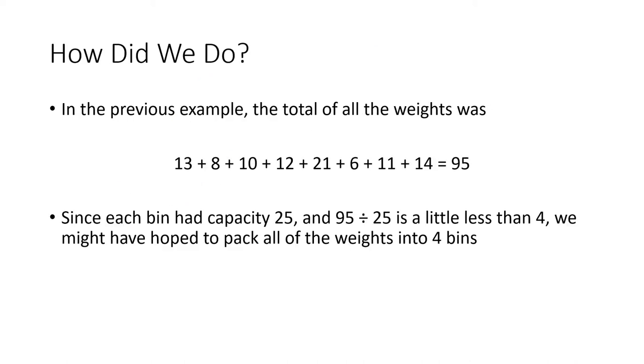So how did we do? One way to measure how well we did is to add up all the weights. If I add up all those numbers on that list, I get 95. Each bin had capacity 25. If I were to take the weights and split them up—we're imagining we can't necessarily take this object and break it into two pieces, but if we could, if we evenly divided the weight among those bins of capacity 25—95 divided by 25 is a little less than 4.